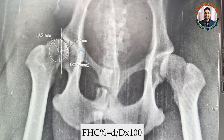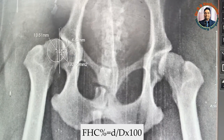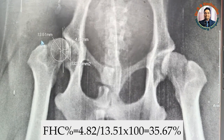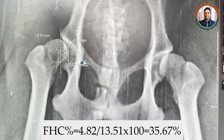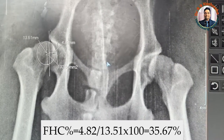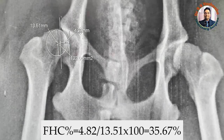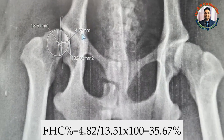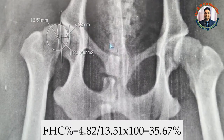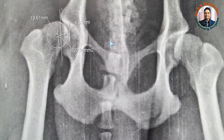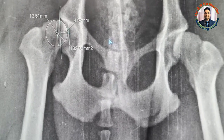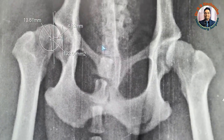The next step is to divide this distance — 4.82 millimeters — by the diameter of 13.51 millimeters, then multiply by 100 to get the percentage. Upon division, 4.82 divided by 13.51 gives a value of 35.67. This means the femoral head coverage percentage in this case is 35.67%, which is very much less than the normal 60%.